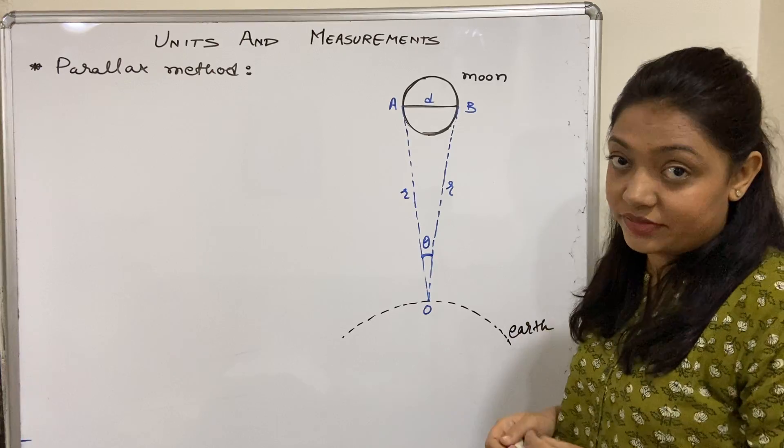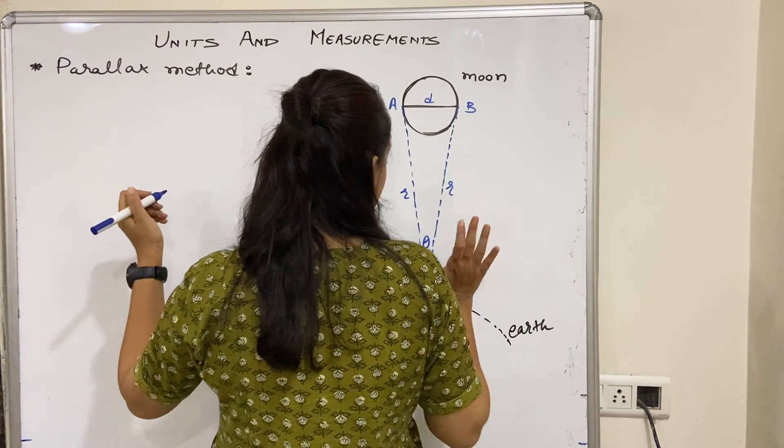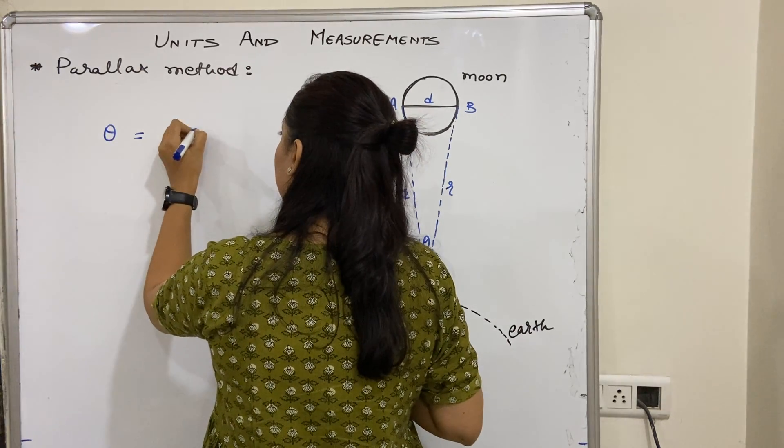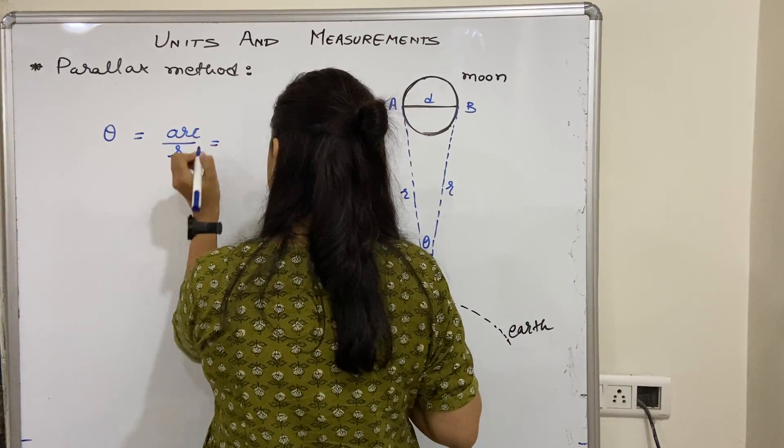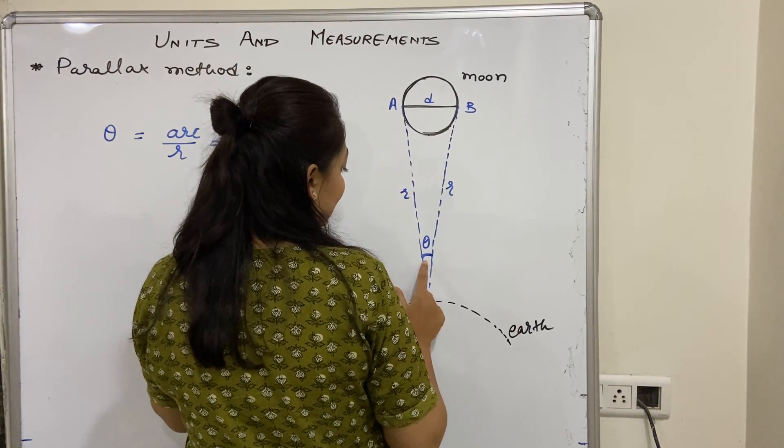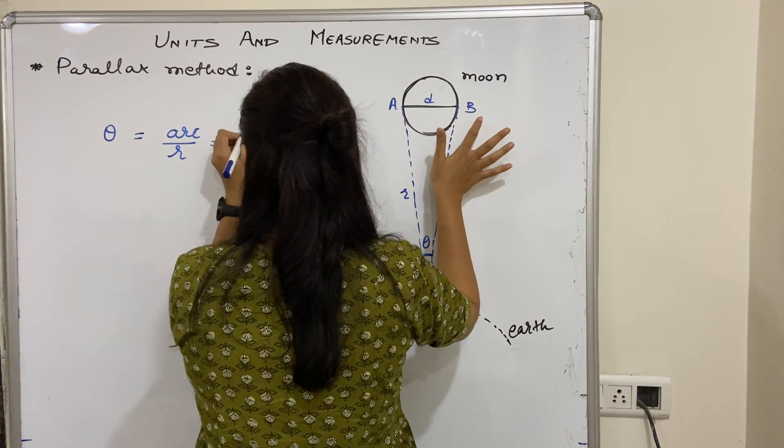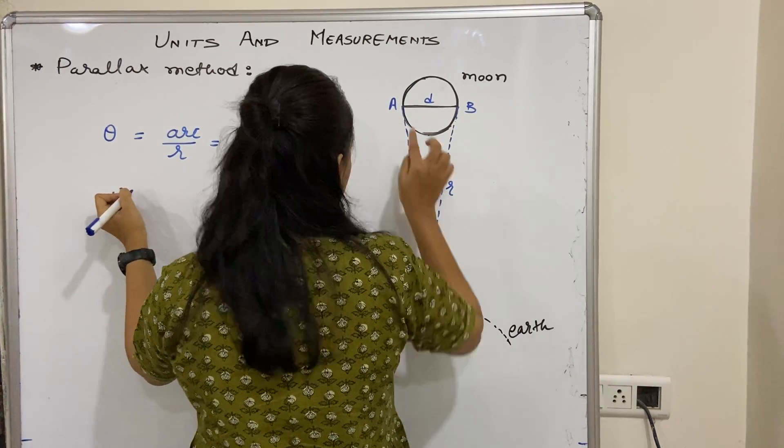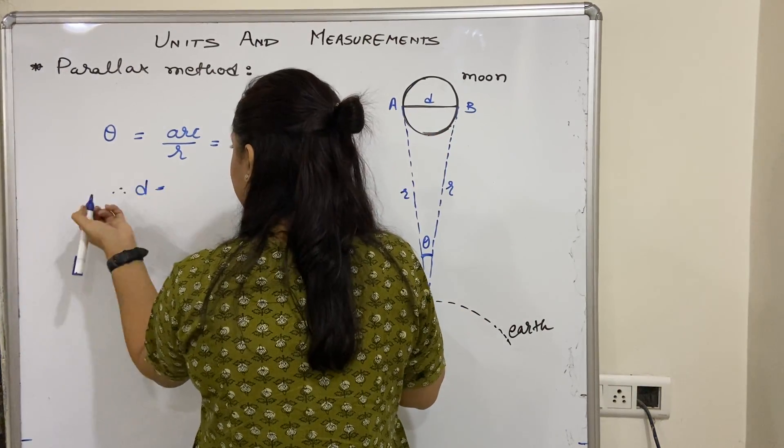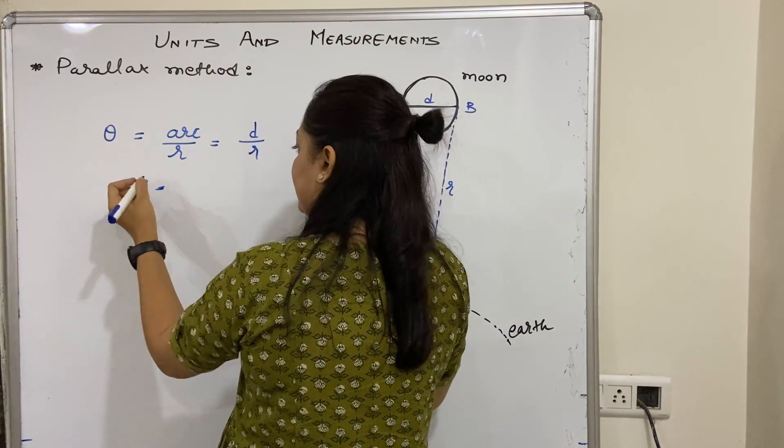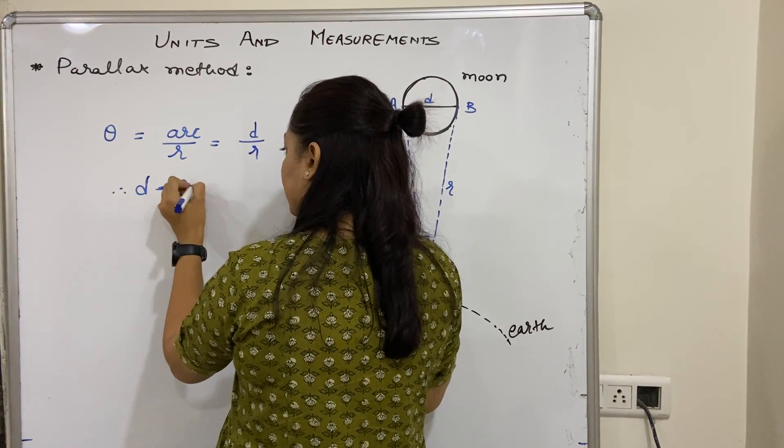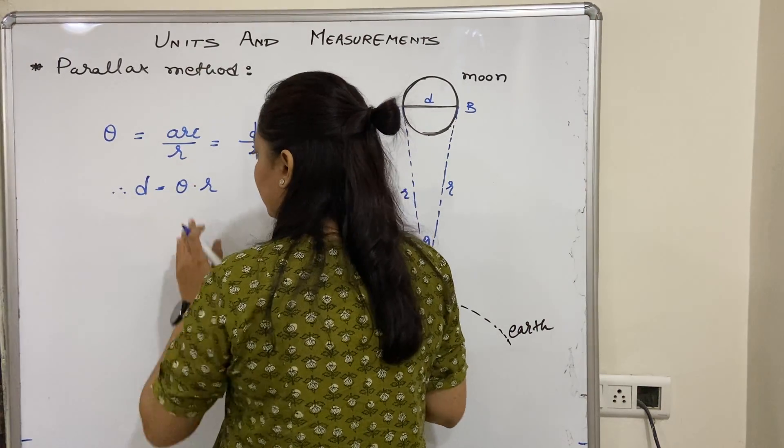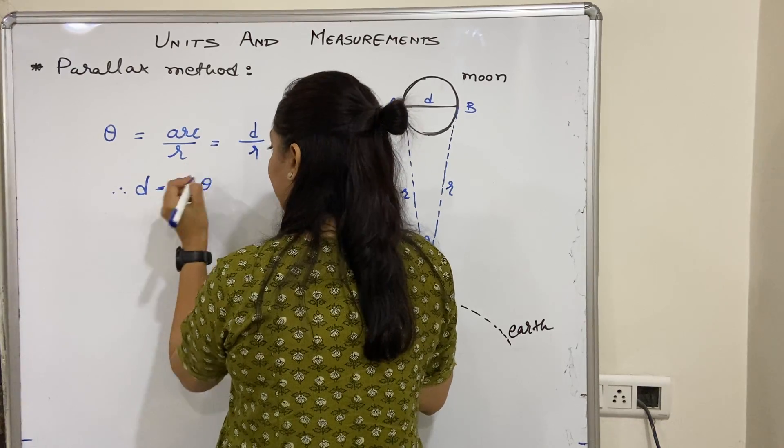Again, from the last video, this formula has been coming repeated: angle is equal to arc upon radius. So what do we need to find? We need to find d. Since r and theta are known, we can say theta into r, or r into theta equals d. Here it is r into theta.